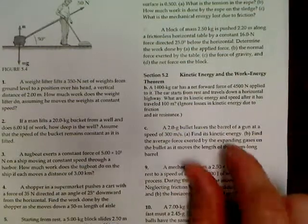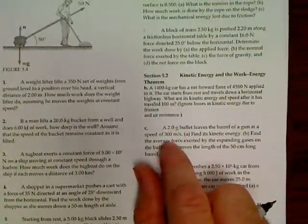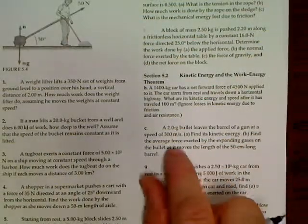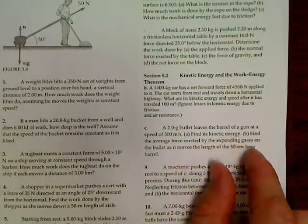A 2-gram bullet leaves the barrel of a gun at a speed of 300 meters per second. Find its kinetic energy. Find the average force exerted by the gases on the bullet as it moves down the 50-centimeter barrel.